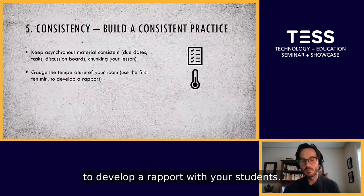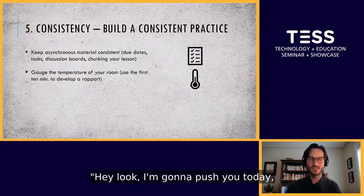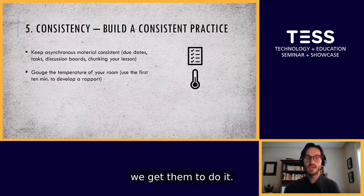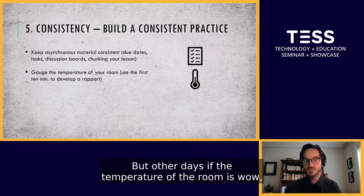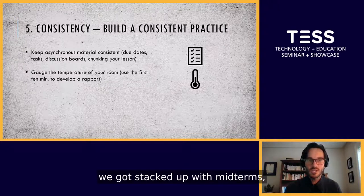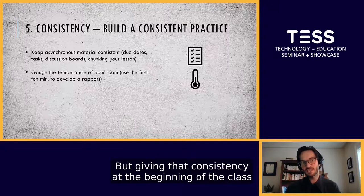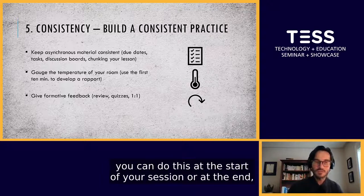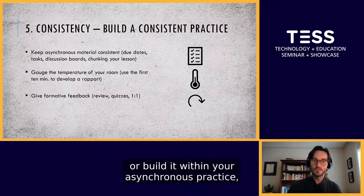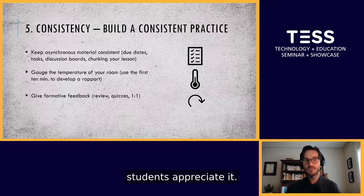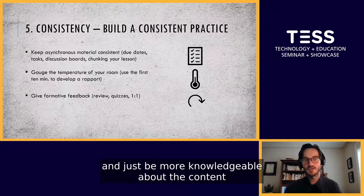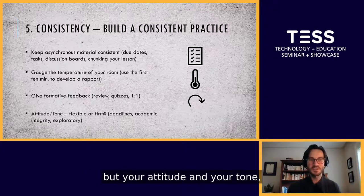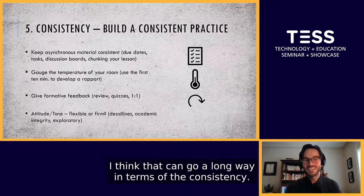I always like to say use the first 10 minutes to develop a rapport with your students and gauge the temperature of your room. Sometimes you can say hey, I'm going to push you today — we're going to do a lot of work. And if they're up for it, then we push them. Other days, if the temperature of the room is they're stacked up with midterms, maybe it's not the day to really push. Giving that consistency at the beginning of class really helps. Formative feedback — whether you're doing review, quizzes, or one-on-ones — you can do this at the start, the end, or build it within your asynchronous practice. Students appreciate it; it helps them prepare and be more knowledgeable about the content. Your attitude and tone can also go a long way in terms of consistency.